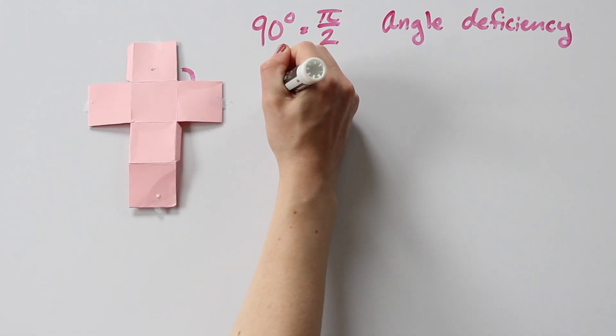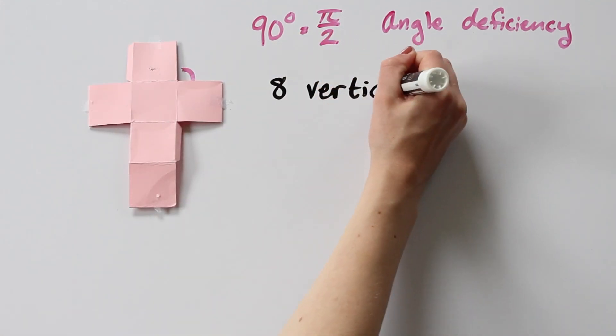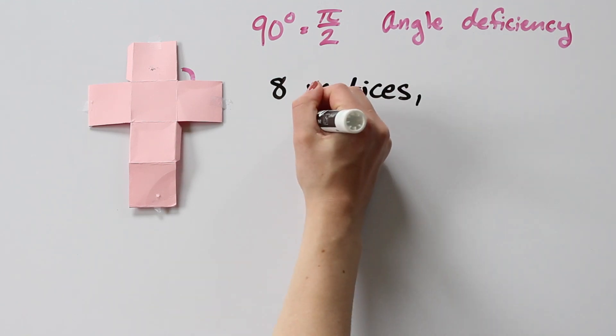Okay, so there are eight identical vertices, each with an angle deficiency of pi over 2.